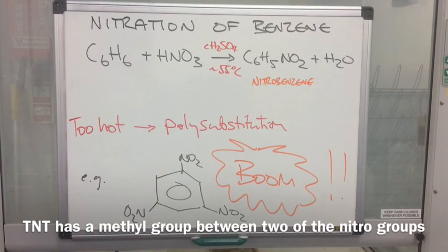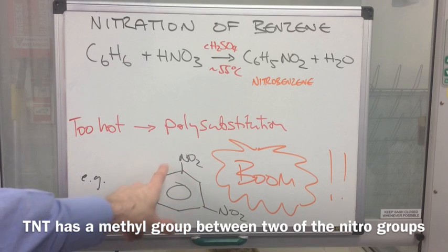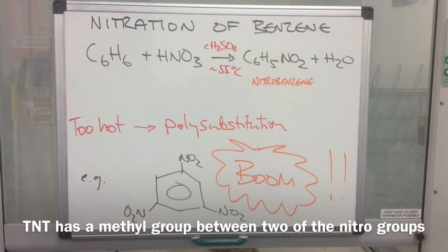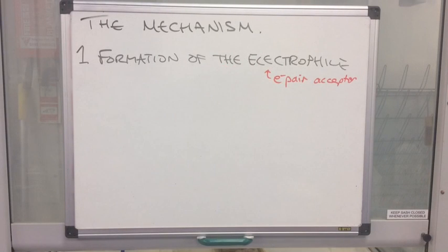And obviously you don't want that. So you can see there now I've drawn up too hot, you get polysubstitution. There's an example of a trinitro substituted benzene ring, and boom it would explode, or it's more likely to explode. So you definitely don't want that. So we'll go into the mechanism now.